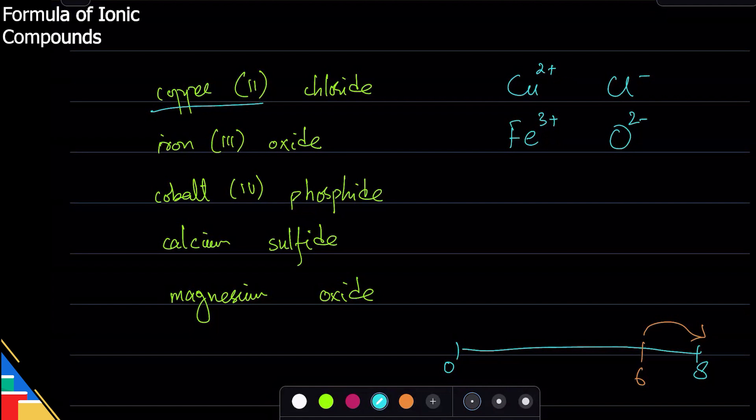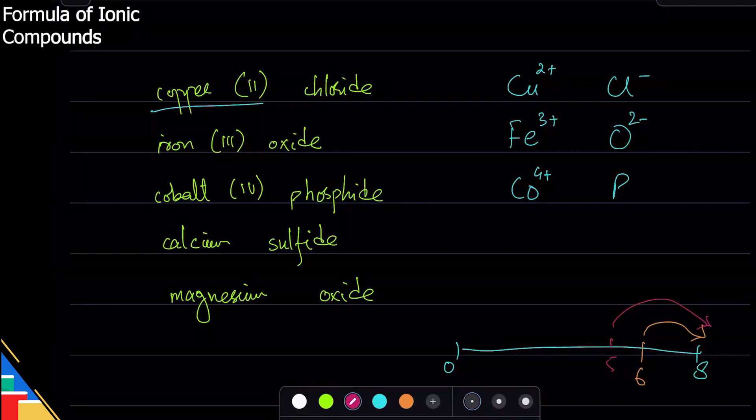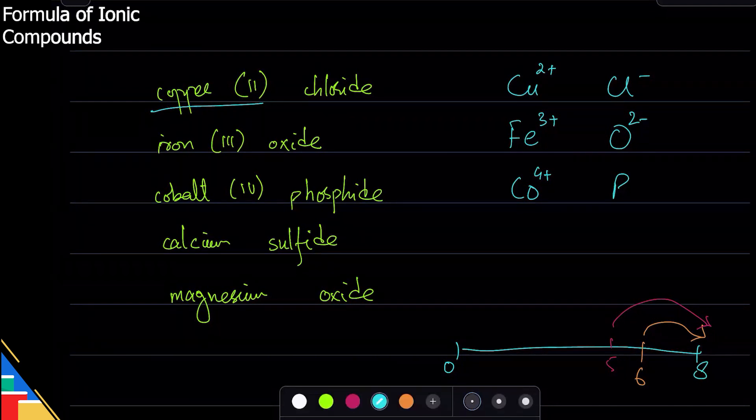Similarly, cobalt four - that's straightforward, cobalt plus four. Phosphide - again going to the periodic table, phosphorus is in group five, so it is at group five. It will need three to get to eight and lose five to get to zero. It is easier - zero is closer - so phosphorus will have the charge minus three.